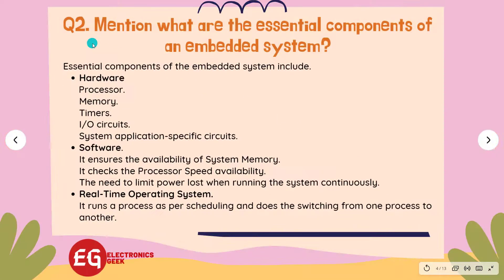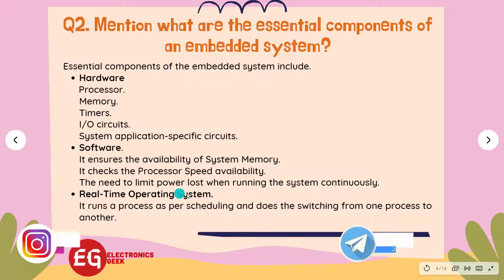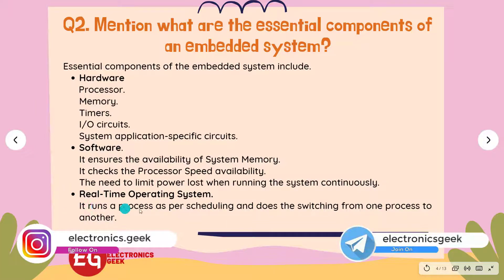Question 2: Mention what are the essential components of an embedded system? Answer: Essential components of an embedded system include hardware processor, memory, timers, IO circuits, system application-specific circuits, and software. It ensures the availability of system memory, checks processor speed availability, limits power loss when running the system continuously, and uses a real-time operating system that runs processes as per scheduling and handles switching from one process to another.